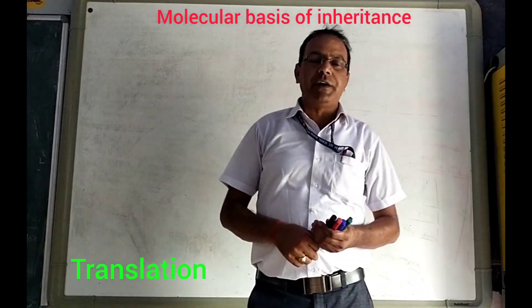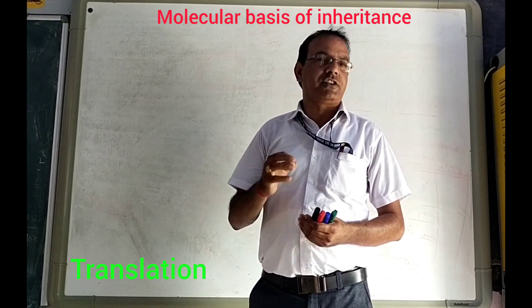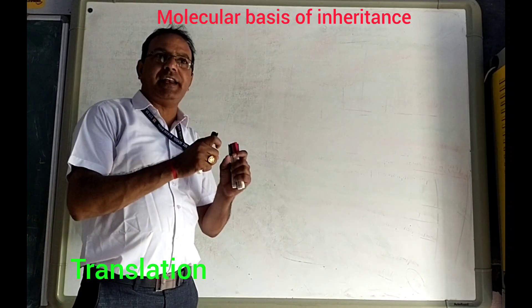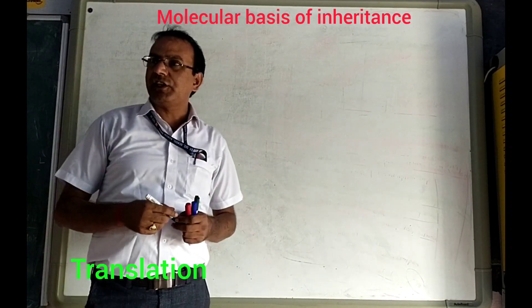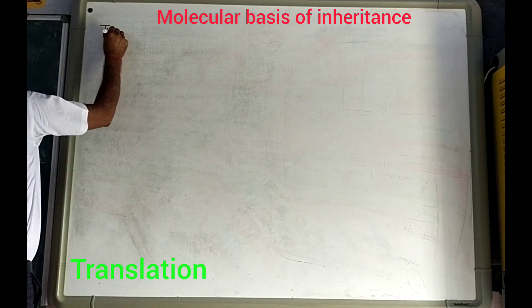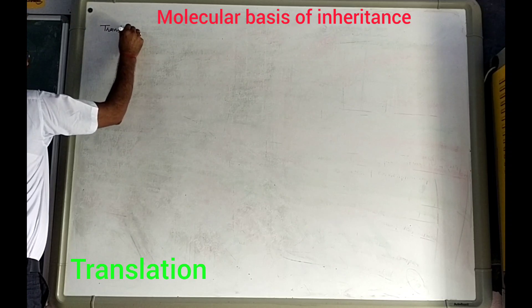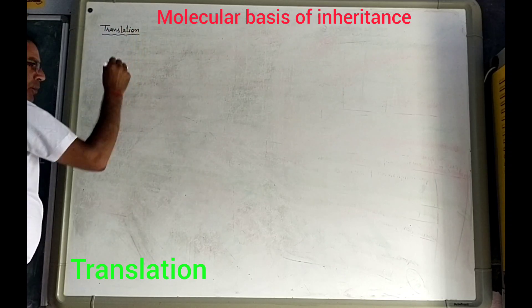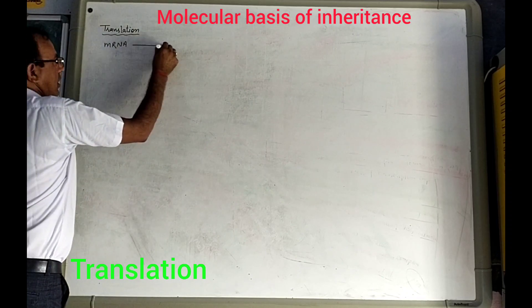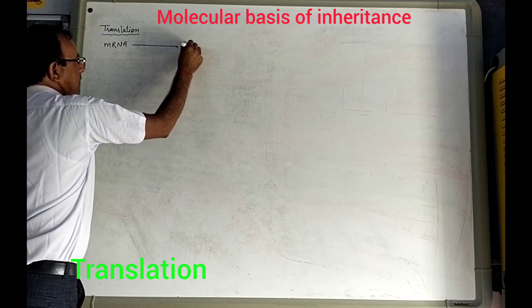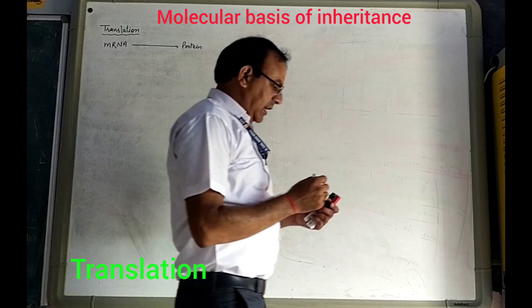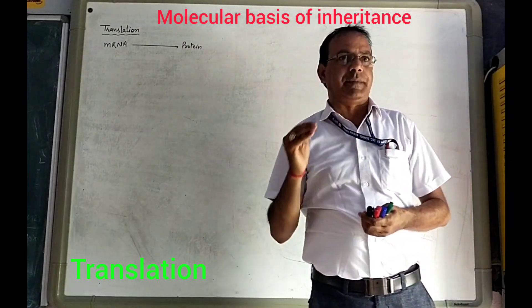Hello students. In the previous part we discussed about tRNA and the structure of tRNA. Now in this part we will discuss translation, because tRNA is the RNA which helps in the translation process. What is translation? The process in which mRNA is converted into protein is called translation. The translation process occurs in different steps.